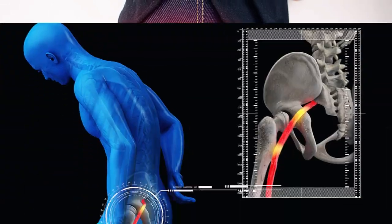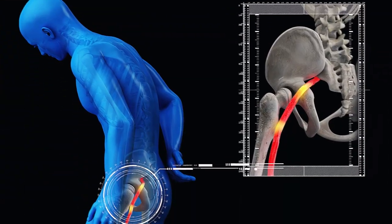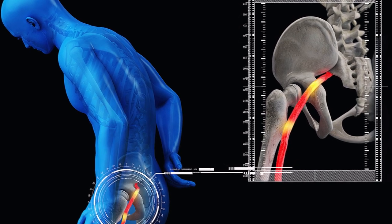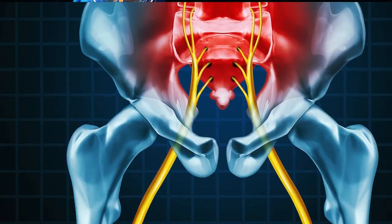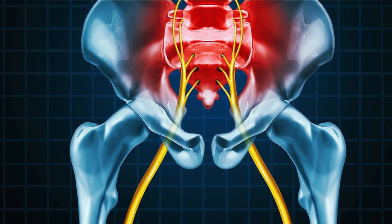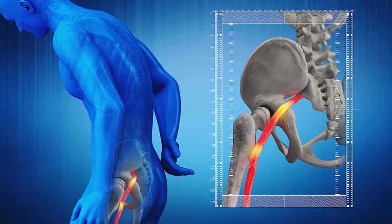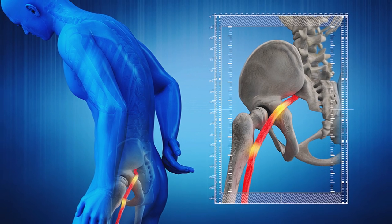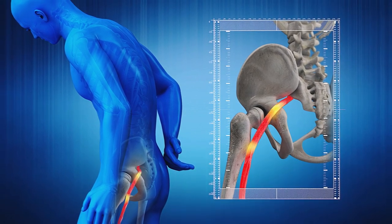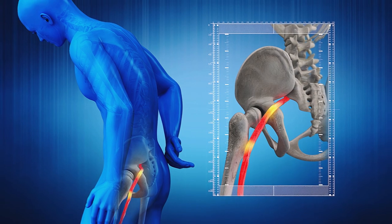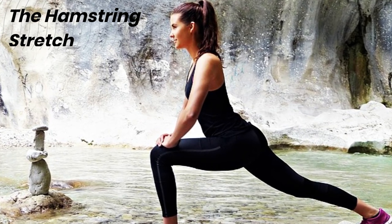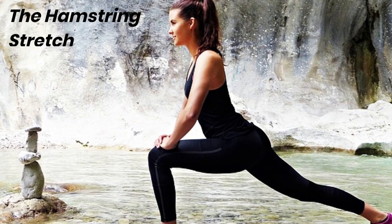Welcome to my channel. Sciatica is a condition that causes pain in the lower back, buttocks, and legs due to irritation of the sciatic nerve. One of the main causes of sciatica is the tightening of the hamstring muscles, which can put pressure on the sciatic nerve, leading to pain and discomfort. In this video, we'll be discussing a simple yet effective hamstring stretch that can help alleviate the pain associated with sciatica.